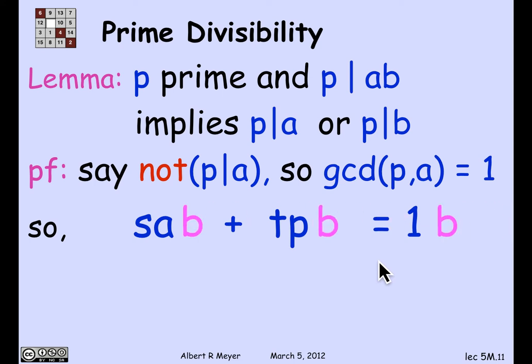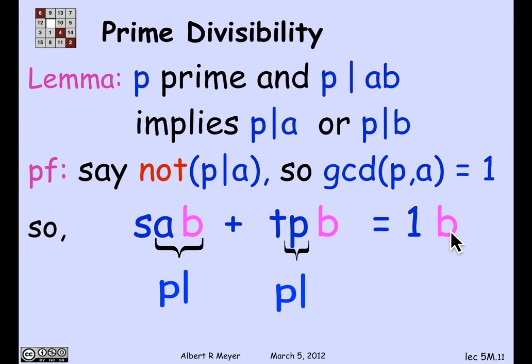Multiply everything by B on the right: SAB plus TPB equals B. The first term on the left is something times AB, and P divides AB, so that first term is divisible by P. The second term explicitly has a P in it, so it's certainly divisible by P. The left-hand side is a linear combination of multiples of P and therefore itself a multiple of P, which means the right-hand side is a multiple of P, and the right-hand side is B. So P divides B. We're done.